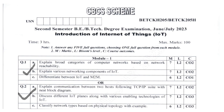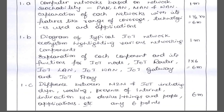For the scheme on computer networks: state what computer networks are and what reachability means, which carries band marks. Explain each network in detail — range of coverage, technologies used, and applications — all carrying a total of six marks, making it seven marks overall.